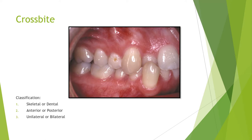As the name indicates, in a crossbite the bite is not normal — it is crossed. In a normal bite, maxillary teeth overlap mandibular teeth. When a mandibular tooth is overlapping a maxillary tooth instead, that condition is called a crossbite. This crossbite can be either skeletal, related to the basal bone of the maxilla and mandible, or dental, meaning only one or a few teeth are in crossbite with no skeletal origin.